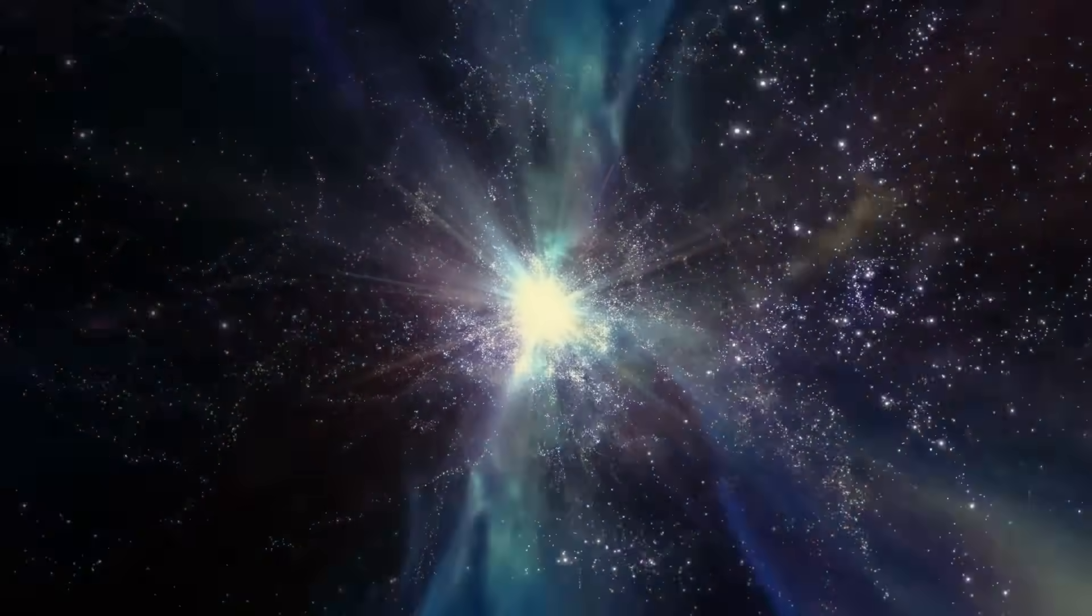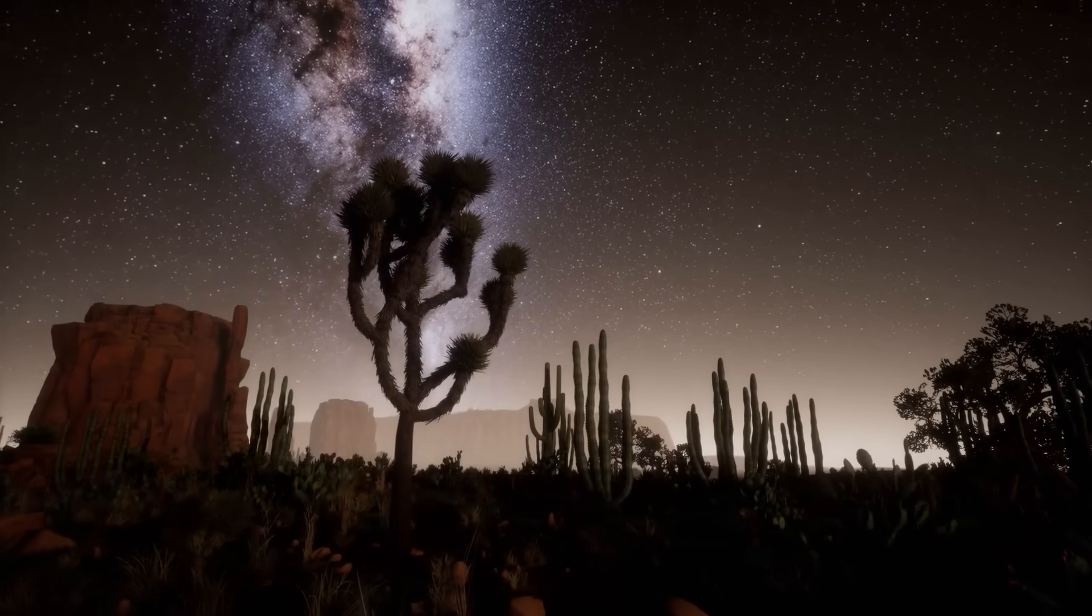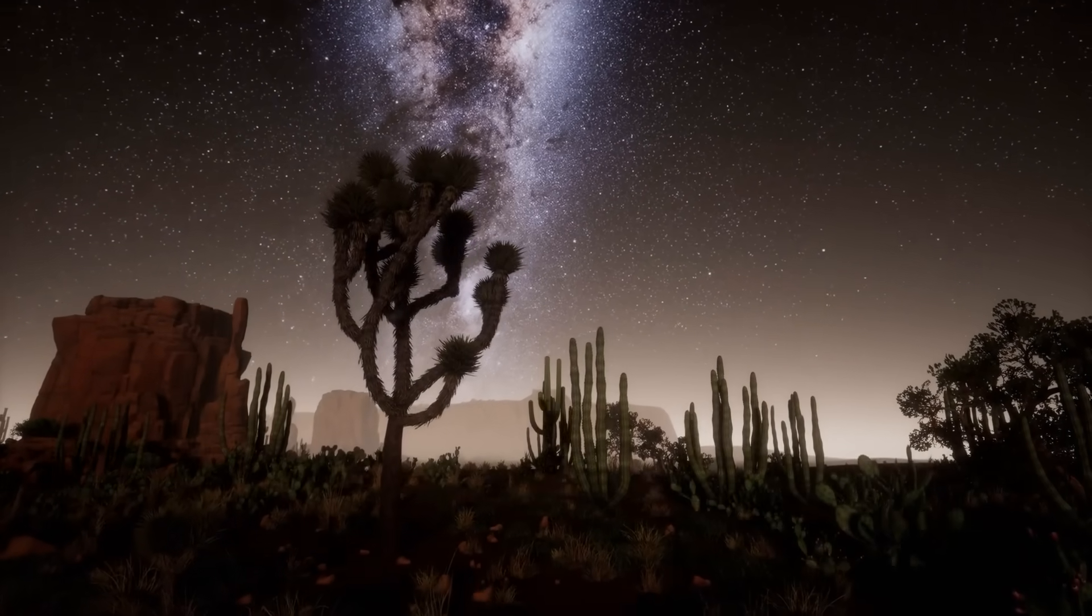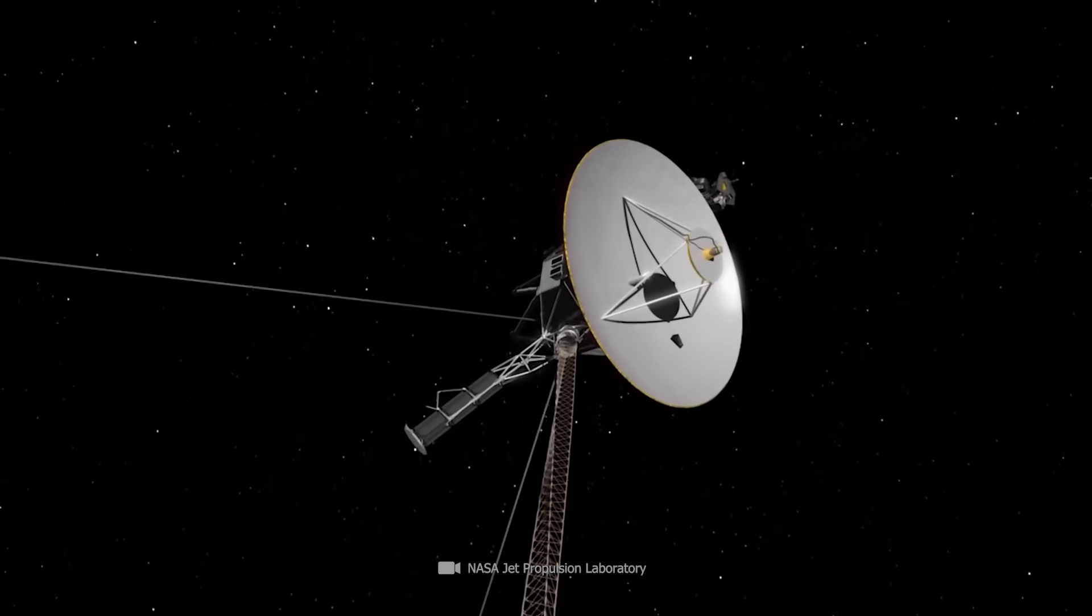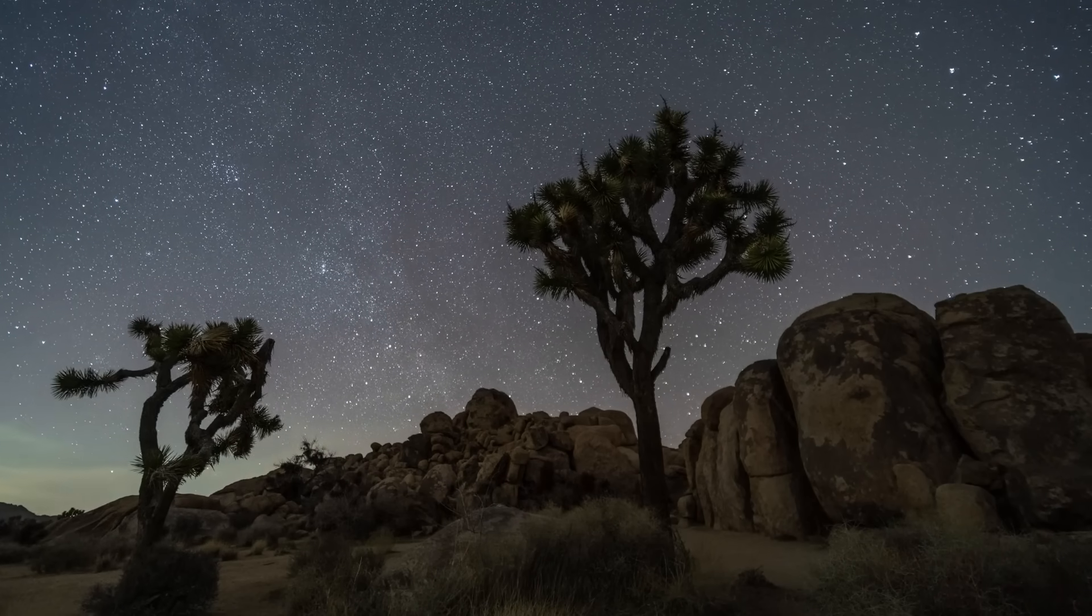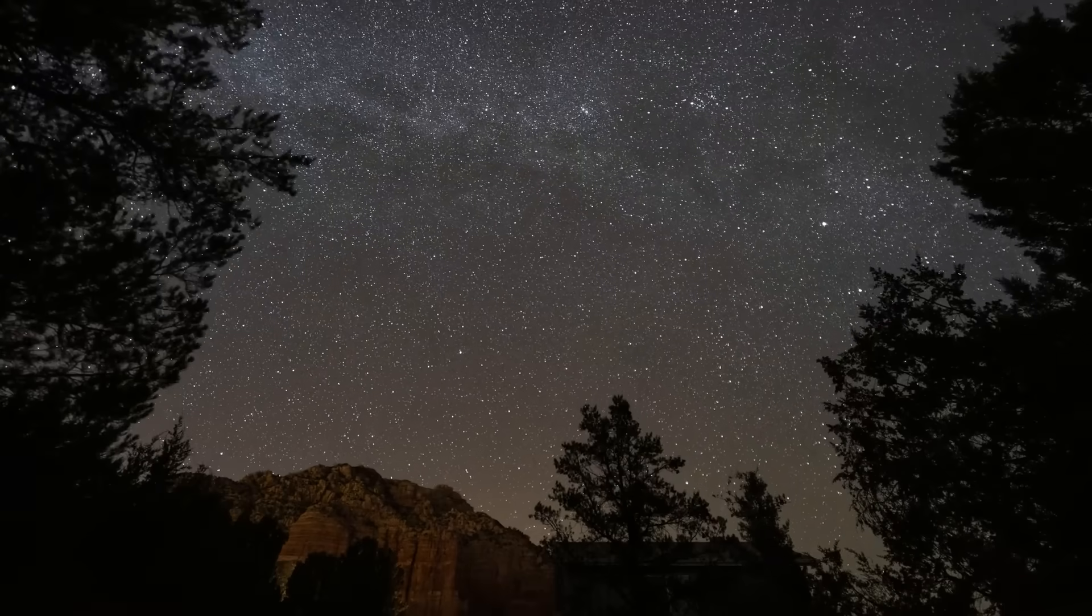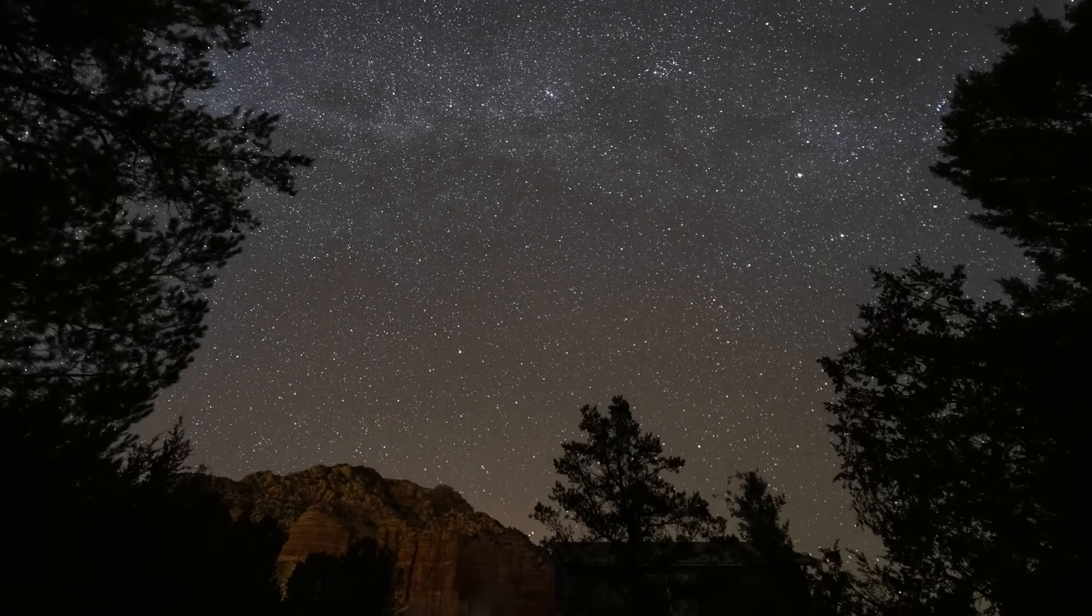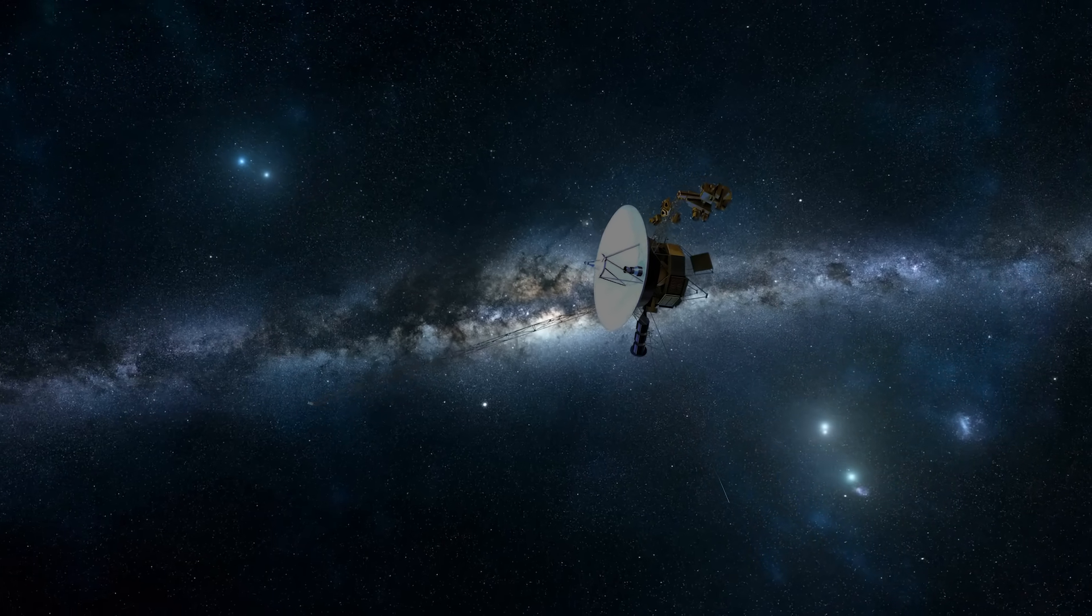However, Voyager 1 has not become significantly faster despite the greatly changed environment and the far lower particle density in interstellar space. This shows that this space is not really empty. Something is still offering sufficient resistance to prevent the probe from accelerating infinitely. We know very little about this space so far. Basically, the measurement data from Voyager 1 and 2 are the first reliable indications from this area of the universe.